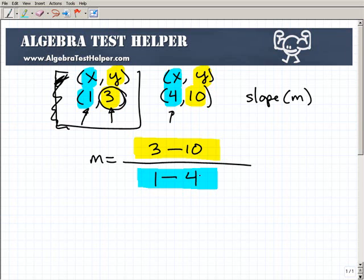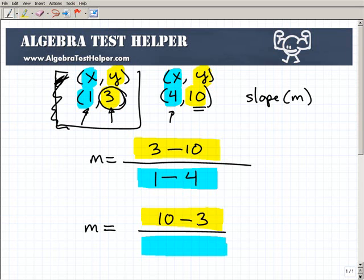So you can set it up that way, 3 minus 10 over 1 minus 4. Or, if you wanted to, you could do the same thing this way. You could see that it's not going to make a difference, but the order does make it extremely important when you're calculating slope. So let's suppose I started with the 10 here, that's going to be 10 minus 3. That's the difference of the y's. Well, how am I going to write the differences of the x if I selected 10 first? Well, it would be 4 minus 1. So you have to remain consistent.